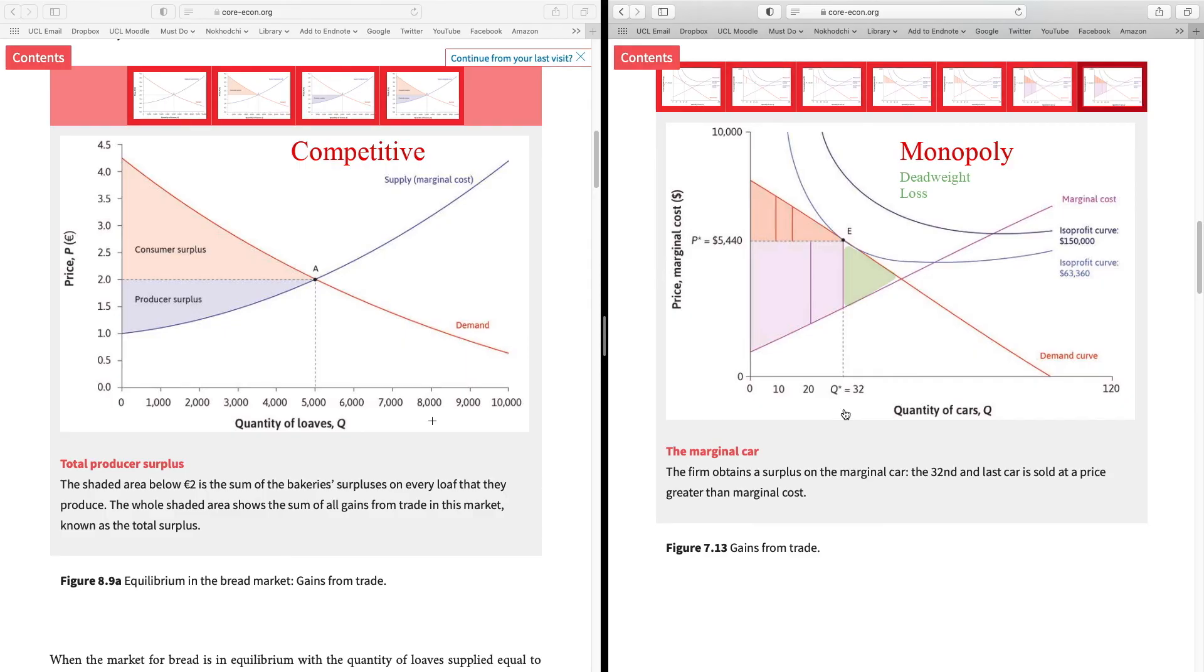Now, let me focus on the competitive market. There, you have no missed opportunities. All the mutually beneficial transactions that could have taken place between consumers and producers have actually taken place. There is no deadweight loss. The competitive market has maximized the surplus going to consumers and producers. And in that sense, we say competitive markets are Pareto efficient.